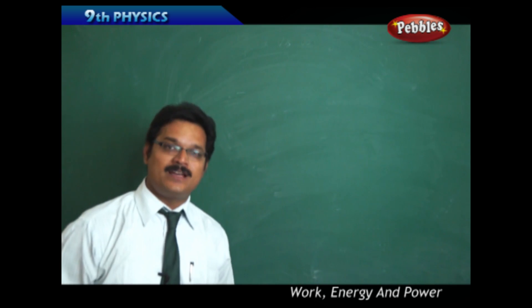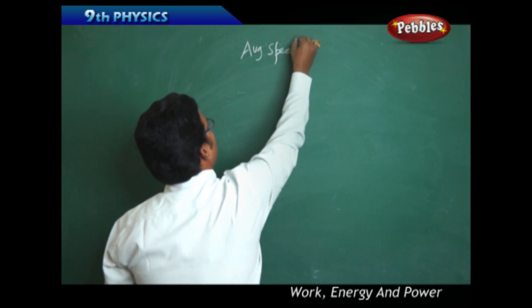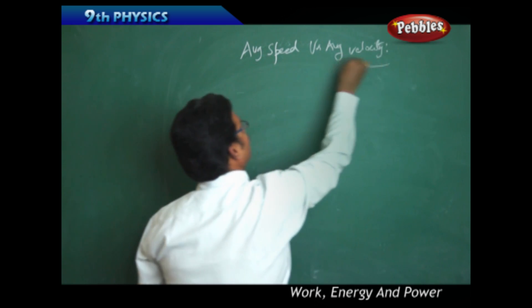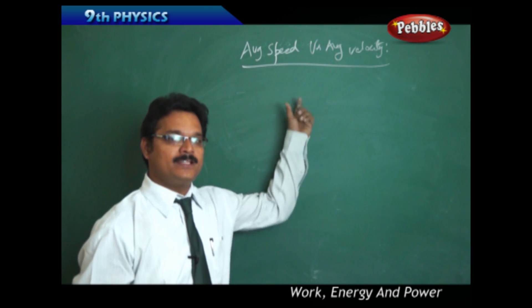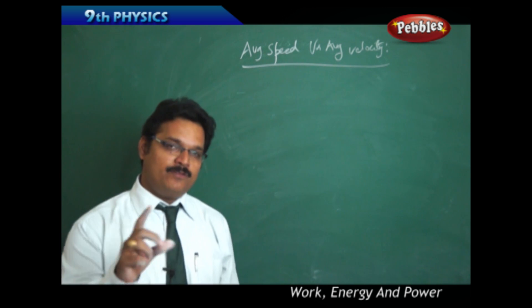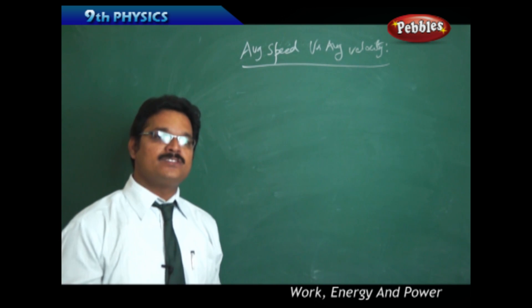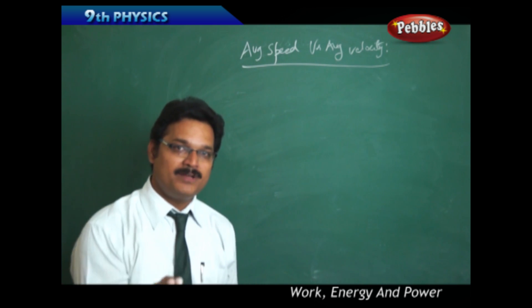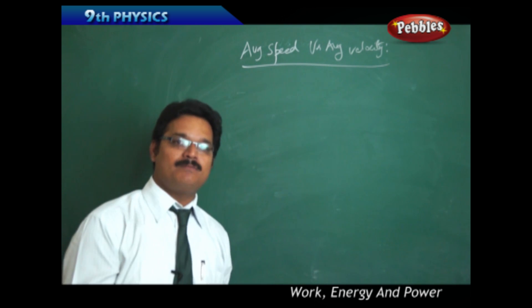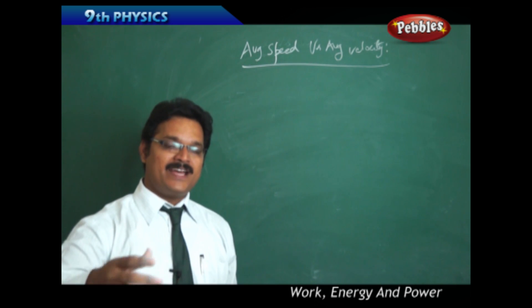We discuss average speed and average velocity. About average speed — if you are riding a bike, each and every 5 or 10 seconds, if you watch the speedometer, you observe that sometimes your bike is moving at 20 kmph, sometimes 30 kmph, sometimes 60 kmph, sometimes 5 kmph. Every few seconds, the speed is changing.